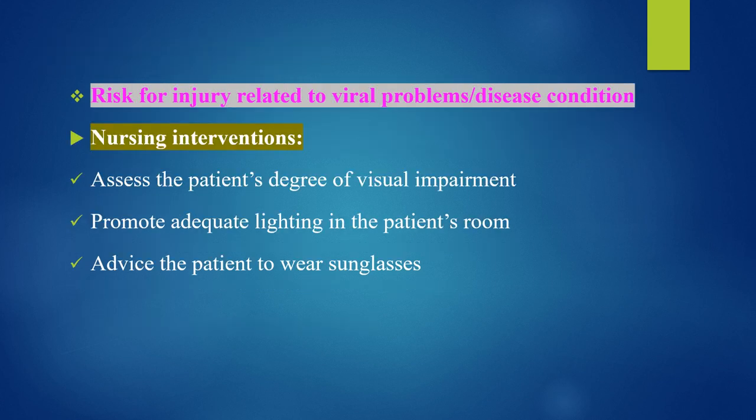Nursing diagnosis 2: Risk for injury related to viral disease condition. Interventions: Assess the patient's degree of visual impairment, promote adequate lighting in the patient's room, and advise the patient to wear sunglasses.